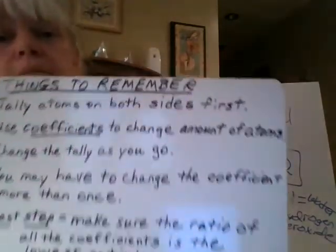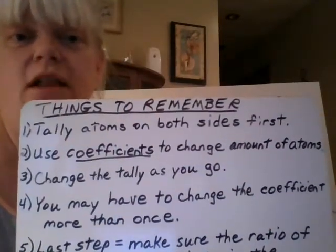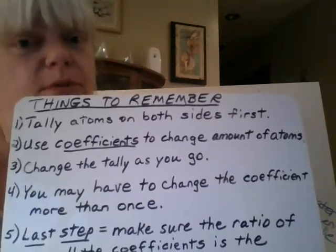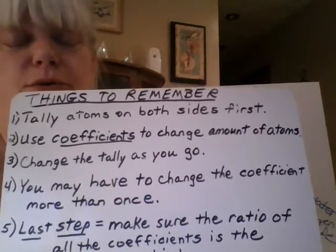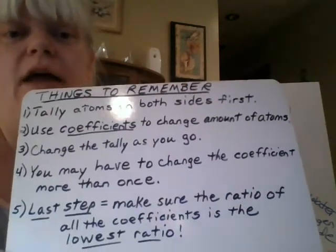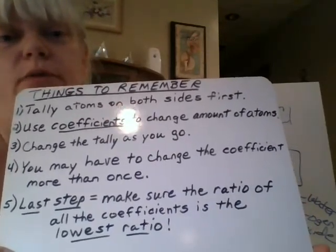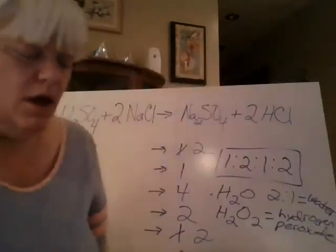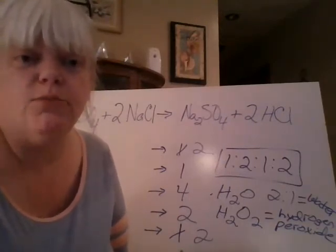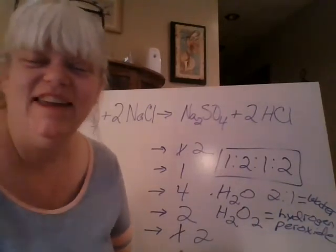Go back to the list here again. And, I get it, yeah. Change the tally as you go. You may have to change a coefficient more than once. We didn't have to on these two, but it happens a lot. So, don't get discouraged if you start out with one coefficient number and you end up, you know, saying, well, that's not going to work and you have to change it again. And, last step, make sure that ratio of the coefficients is in the lowest ratio before you give me a final answer. Okay? All right. So, I hope this helps. And, look for the assignment that deals with more balancing today. And, we'll see where you land on this one and go from there. Okay? Have a good day.